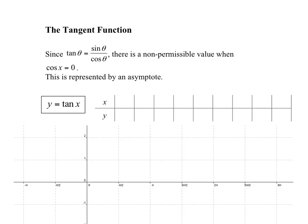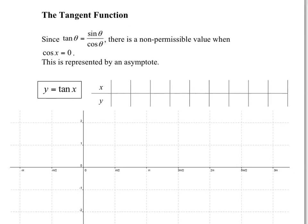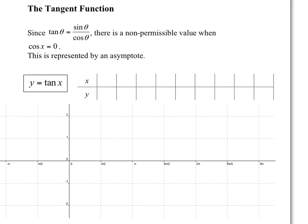And the last one — the tangent function. The tangent function, if you recall, is sine over cosine. So we're going to have a non-permissible value when cosine equals 0. You cannot divide by 0, so what happens there is an asymptote. We learned in grade 11 pre-calc that whenever you divide by 0, there's an asymptote created. So let's look at the same kind of values for tangent.